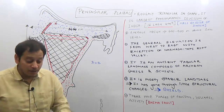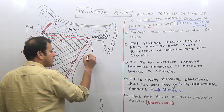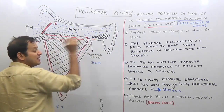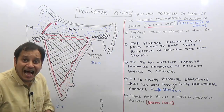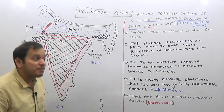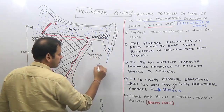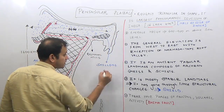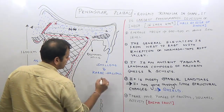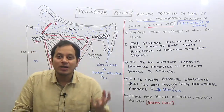The plateau is bounded on the west by the continuous Western Ghats and on the east by the Eastern Ghats. The northeastern part of the peninsular plateau is the Rajmahal Hills, and the northeastern extension is known as the Shillong plateau or the Karbi Anglong plateau.